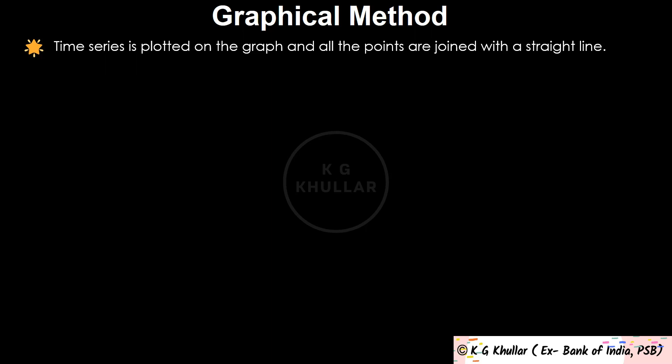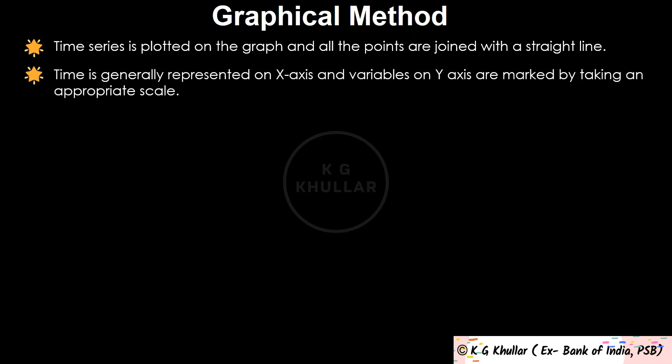The graphical method is one of the easiest methods to analyse the trend of a time series. Under this method, the time series is plotted on a graph and all the points are joined with a straight line. Time is represented on the x-axis and the economic variable being analysed is plotted on the y-axis. Finally, by taking care of fluctuations in the data, a suitable smooth curve is drawn from approximately the middle of actual fluctuations, and this line shows the long-term trend.